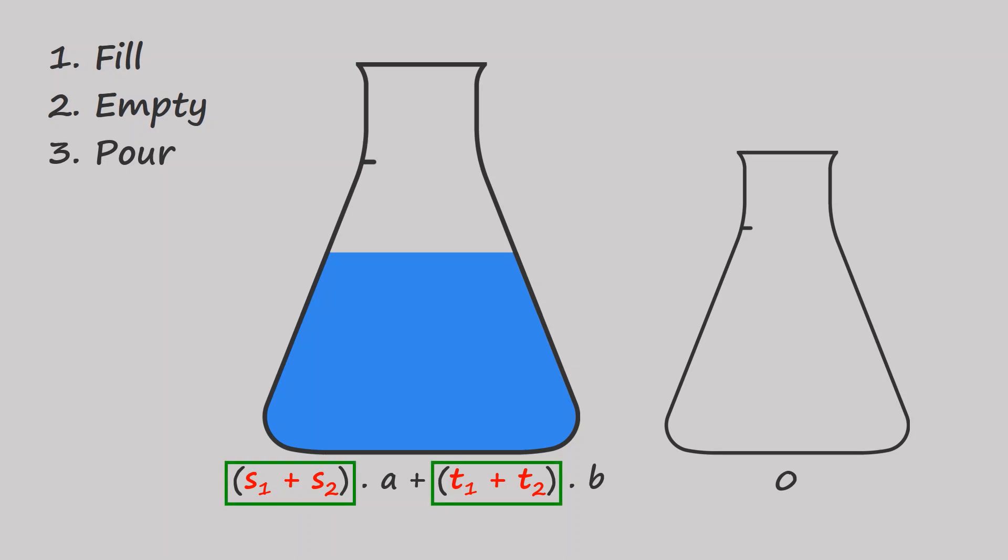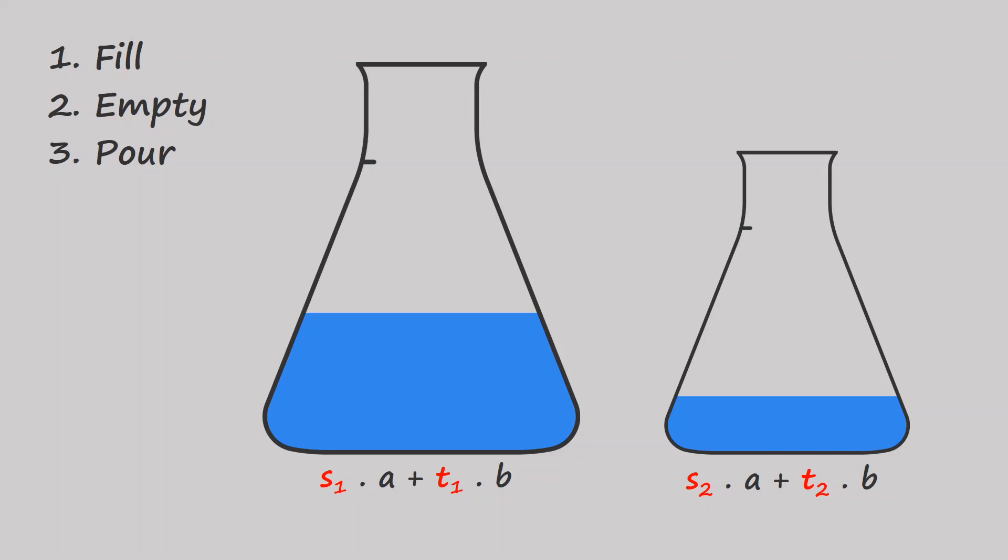The second case where you pour till the other flask is filled is a little bit more challenging. The way to tackle it is by giving labels to the amounts of water in the flasks, like F1 and F2 here. F1 and F2 are integer linear combinations. We also need to determine how much was initially empty in the flask we want to fill.